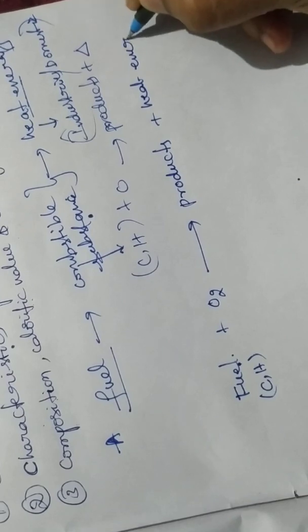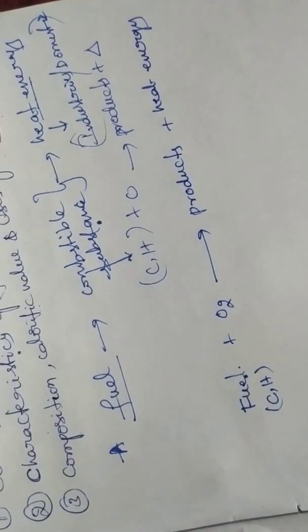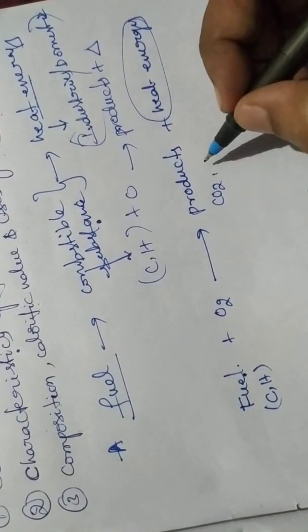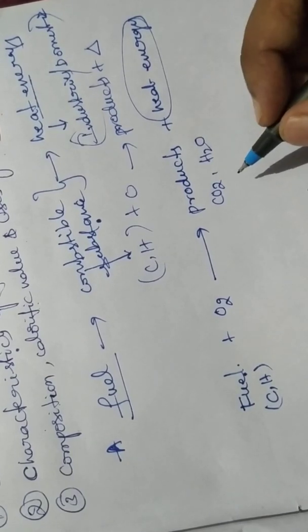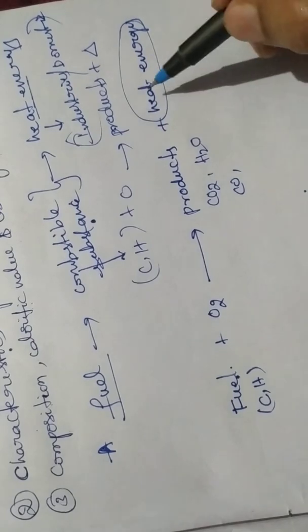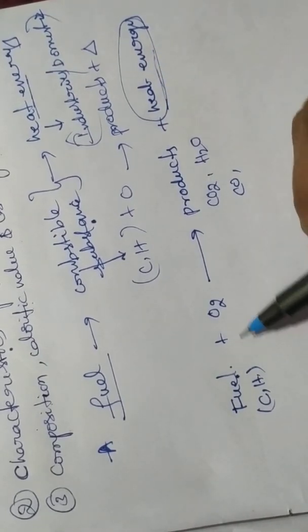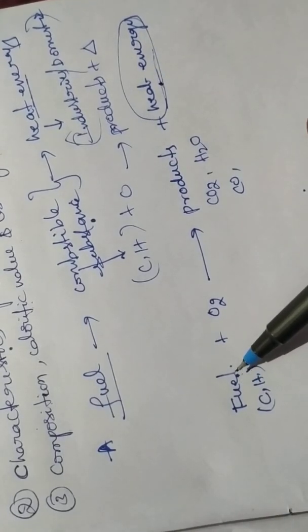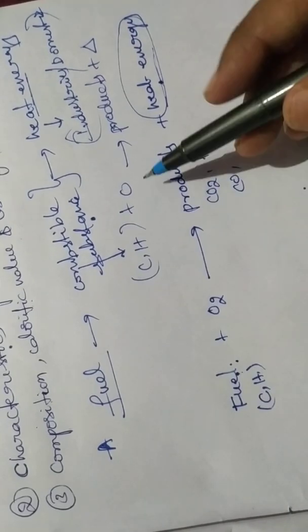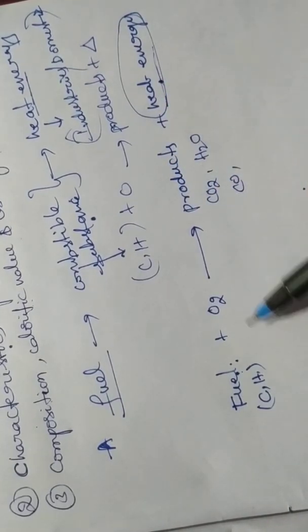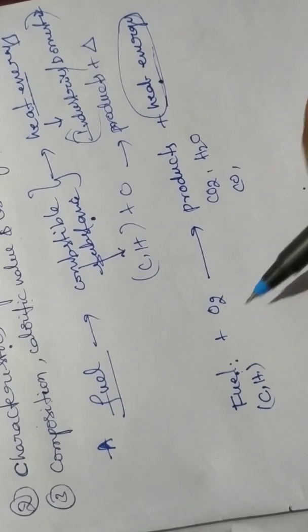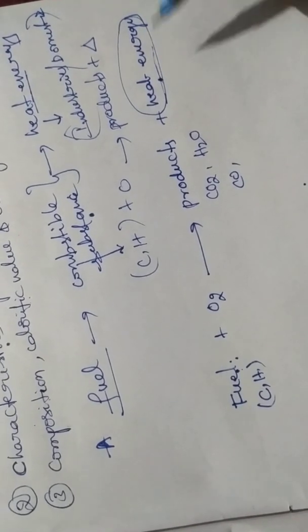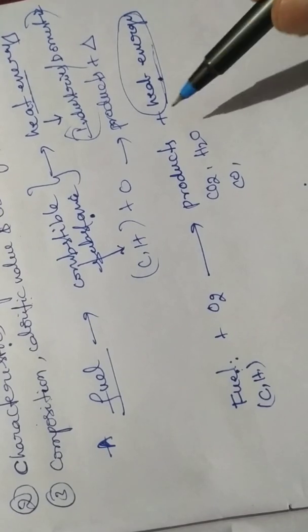This heat energy is used for domestic and industrial purposes. Products such as carbon dioxide, water, and carbon monoxide are by-products. This heat energy will be released. This heat energy is due to the rearrangement of valence electrons in the atoms — carbon, hydrogen, and oxygen — during the reaction.